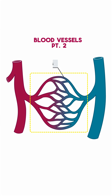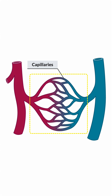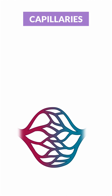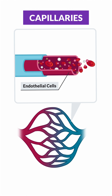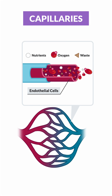Next, exchange happens at the capillary level. This is where the veins and arteries meet up. These capillaries are tiny vessels with just a thin endothelial layer, allowing nutrients, oxygen, and waste to diffuse between blood and tissues.